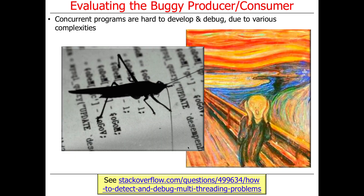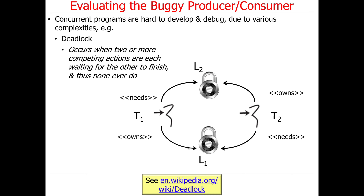You'd be surprised at how much code looks like this in the real world. What makes this hard is that most problems don't actually behave as obviously when they fail as this program — this program blows up, so you know to debug it. Oftentimes you'll get strange results and wonder what happened. One problem is deadlock — it occurs when two or more competing actions in two or more threads are each waiting for the other to finish, and thus none ever do. Thread T1 owns lock L1 and needs lock L2; thread T2 owns lock L2 and needs lock L1 — they're in a circular or deadly embrace, refusing to give up what the other needs.